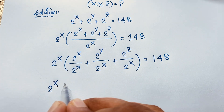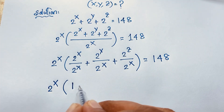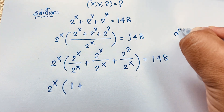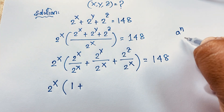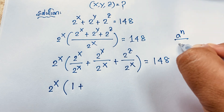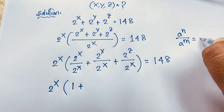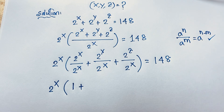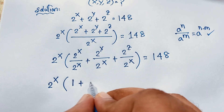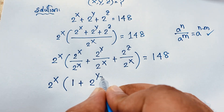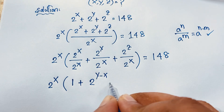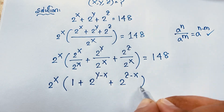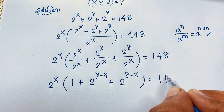Here, 2 to the power x divided by 2 to the power x equals 1. We know that a to the power n over a to the power m equals a to the power n minus m. Applying this exponential formula, we get 1 plus 2 to the power y minus x plus 2 to the power z minus x is equal to 148.